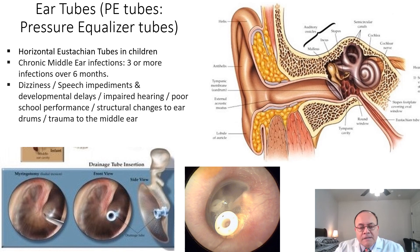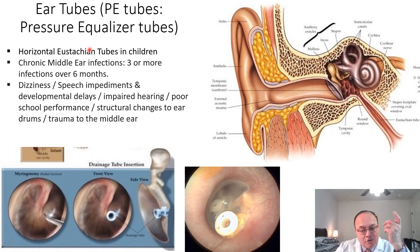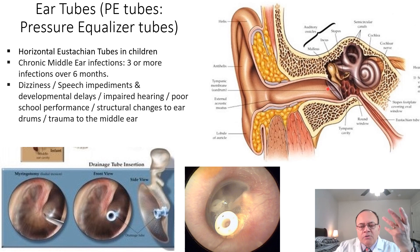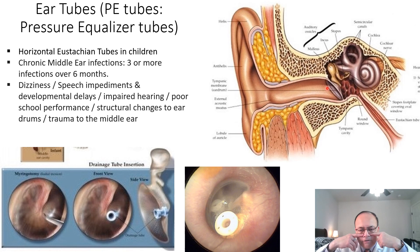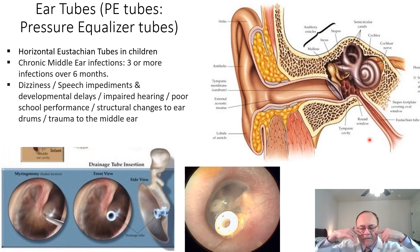Let's discuss PE tubes — pressure equalizing tubes. These are the little tubes that ENT surgeons put into a child's ear, or often an adult's ear, to equalize the pressure between the outside and the inside. Children need PE tubes so often because their heads are shorter, and the eustachian tubes running from the nose to the ear are more horizontal because their heads are flatter.